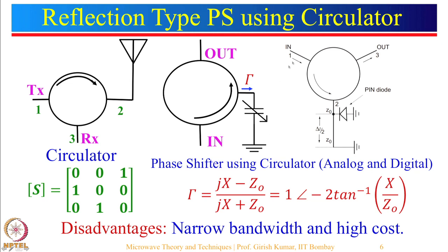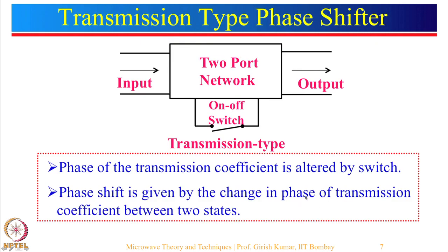Here is the realization of a digital phase shifter using the circulator configuration. The input is given at one port; you can see there is a PIN diode and a line length. When the diode is shorted, power reflects from that point; when it is open-circuited, power travels to the end of the line and reflects back, experiencing a phase delay of 2 pi by lambda multiplied by 2 times the line length. However, this configuration is generally not used because majority of circulators have narrow bandwidth and high cost.